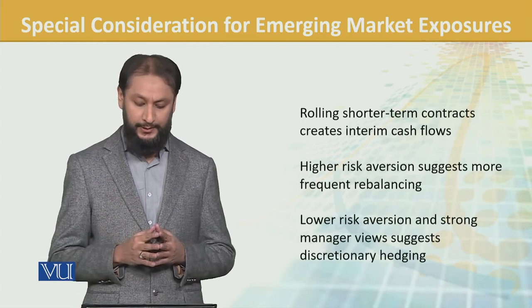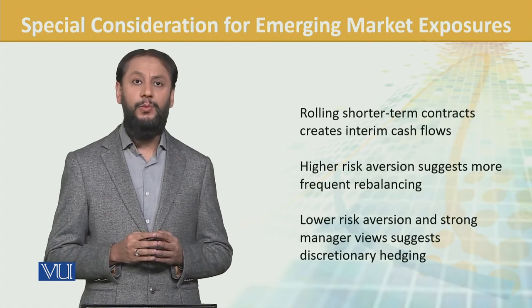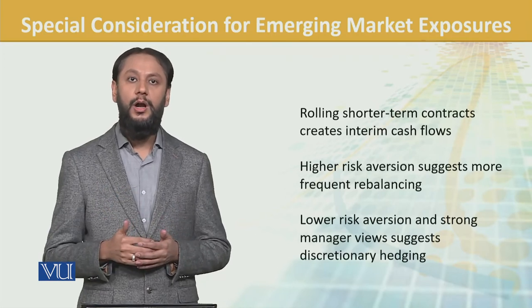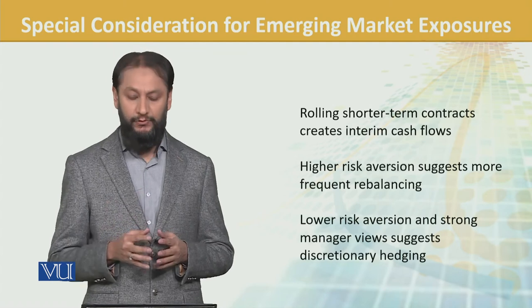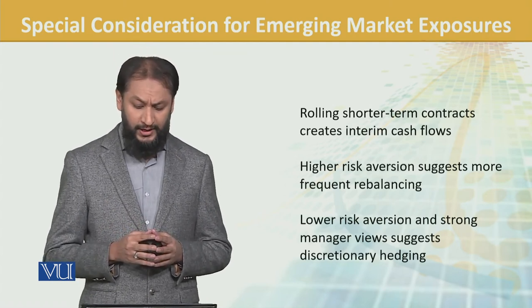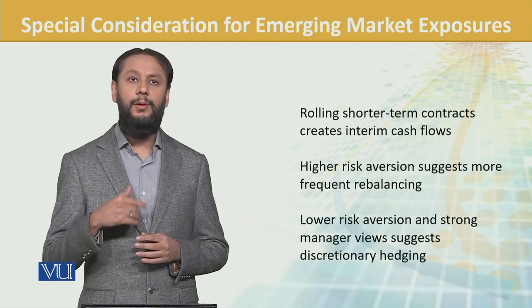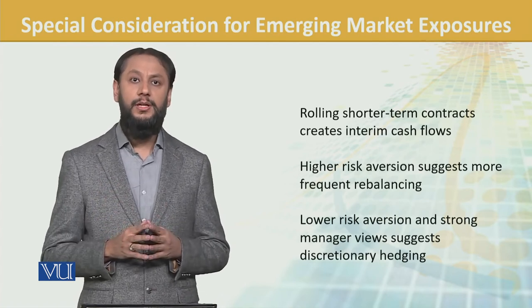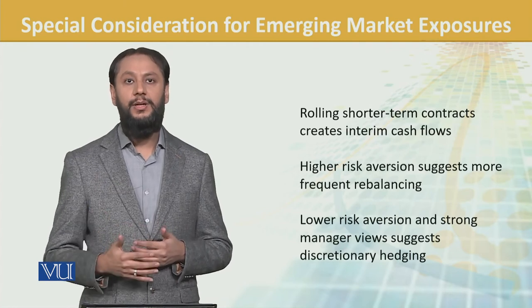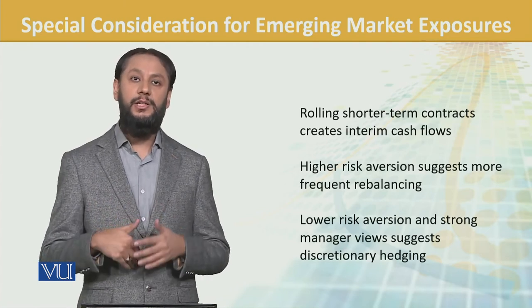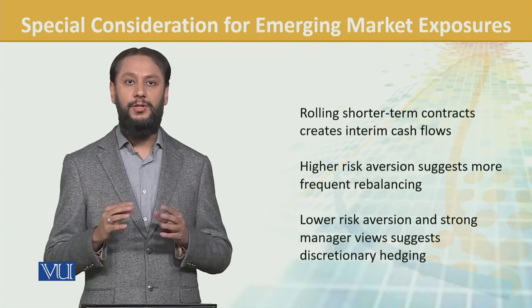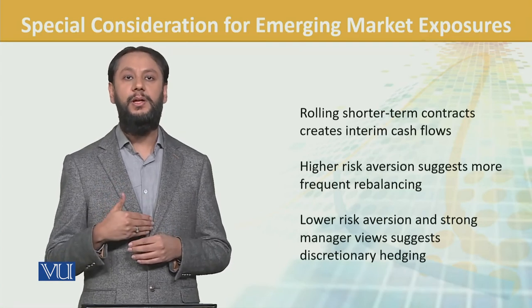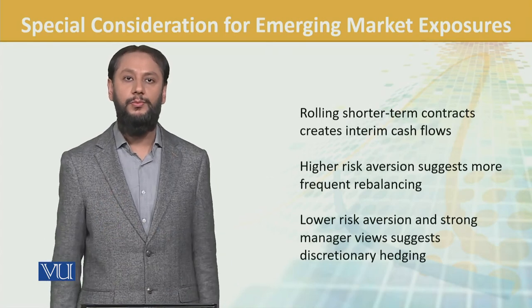Higher risk aversion suggests more frequent rebalancing — risk zyada hai toh portfolio ko bar bar rebalance karna padta hai, jo ek high cost strategy hai. Lower risk aversion and strong manager views suggest discretionary hedging, jis mein manager ke views se decide hota hai ke kis level pe hedge karna hai. Emerging markets mein potential risks kaafi hain lekin expected returns bhi zyada ho sakti hain — overall picture dekh ke aap decide karte hain ke kitna portion invest karna hai.